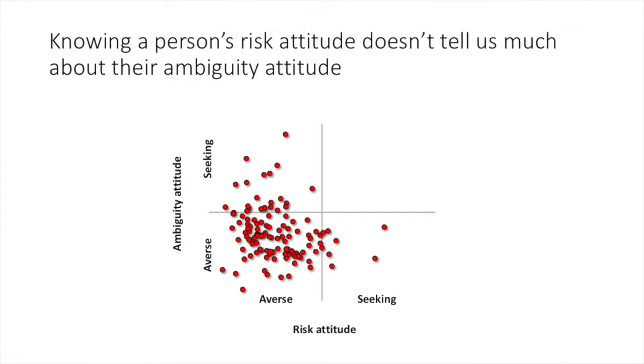Interestingly, research shows there is very little correlation between individual attitudes towards risk and ambiguity. A person might be highly risk-averse but not so averse to ambiguity, or vice versa. So if we're interested in understanding individual differences, it can be useful to look at both risk and ambiguity attitudes separately.